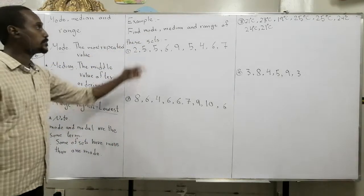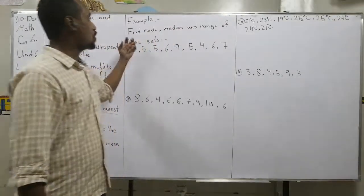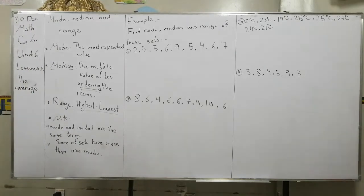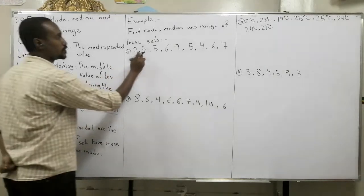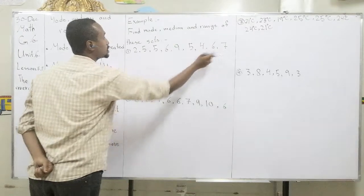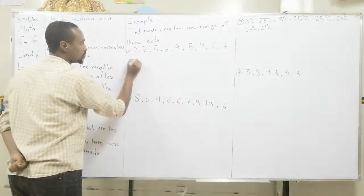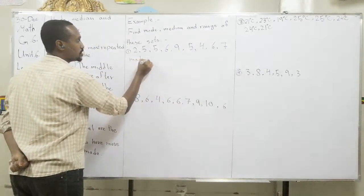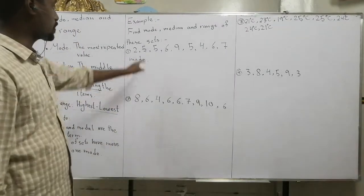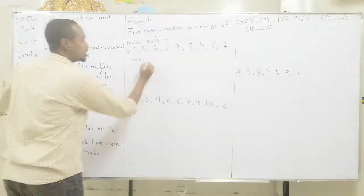Let's start. For example, find mode, median, and range of this set of numbers: 2, 5, 5, 6, 9, 5, 4, 6, and 7. First, let's find the mode. The mode is the most repeated number. What is the most repeated number here? It's five — it's repeated three times.